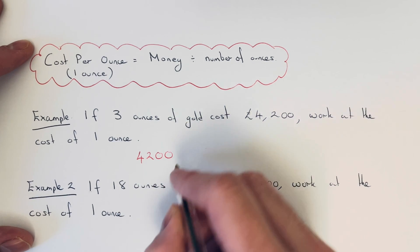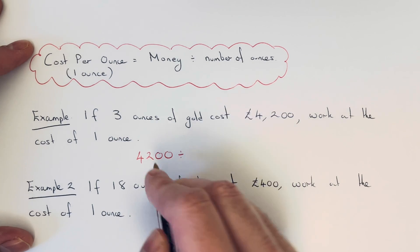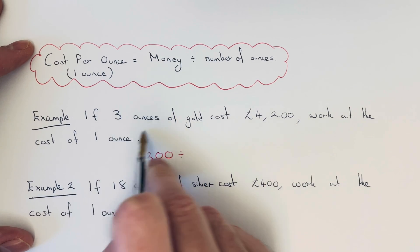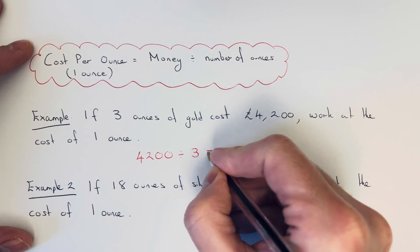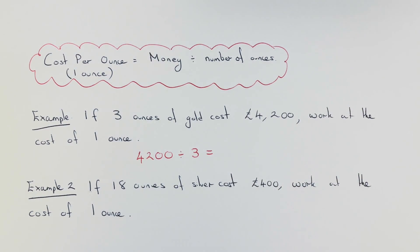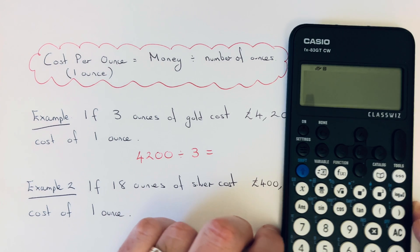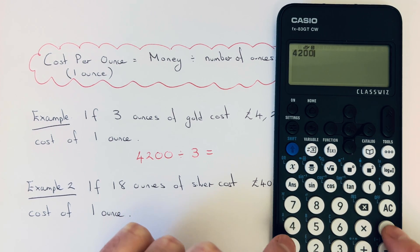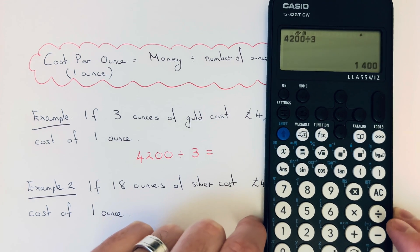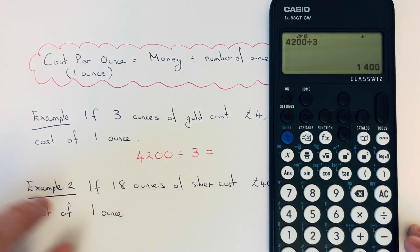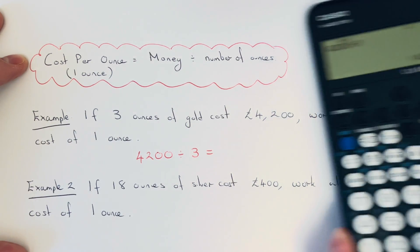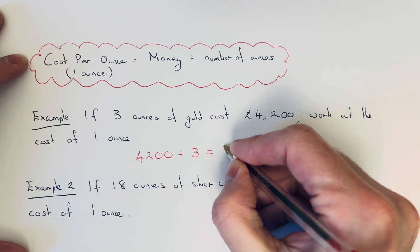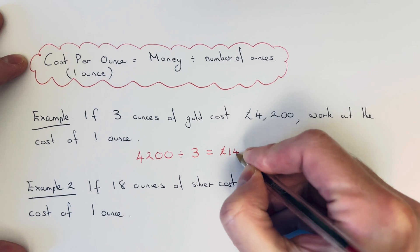Start with your money first and divide it by the number of ounces which you're buying, which is 3. So get your calculator: it's 4,200 divided by 3. So we get an answer of £1,400. That is the price of one ounce of gold.